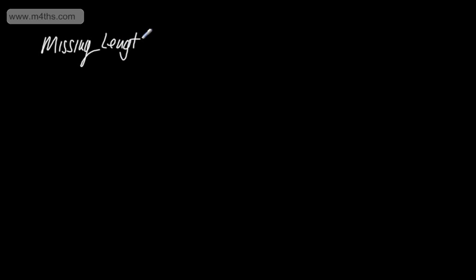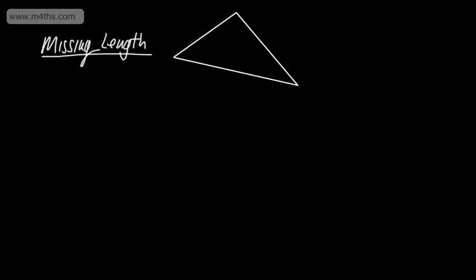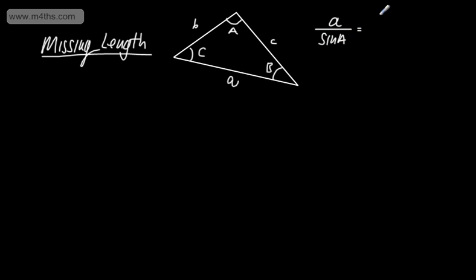We're going to look at using the sine rule to find a missing length. We've got a triangle, and remember we can still use trig ratios and Pythagoras if we have a right-angled triangle. I'm going to label angle A with capital A — the opposite side is lowercase a. We'll call this one B, capital B, with lowercase b opposite. Capital C has lowercase c opposite. The sine rule is: a over sine A equals b over sine B equals c over sine C. We will never use all three of these.